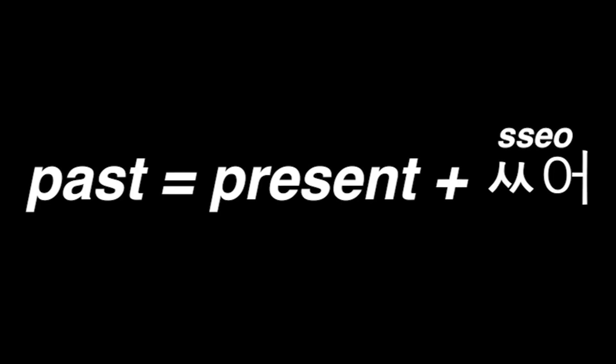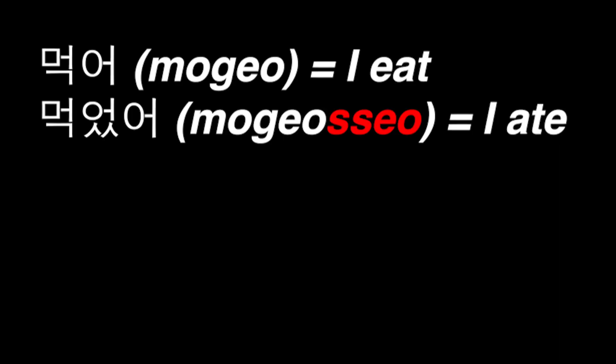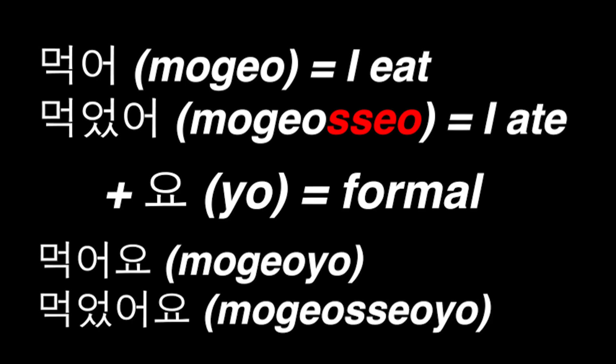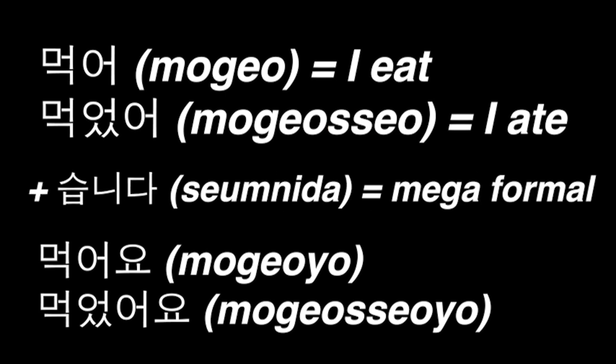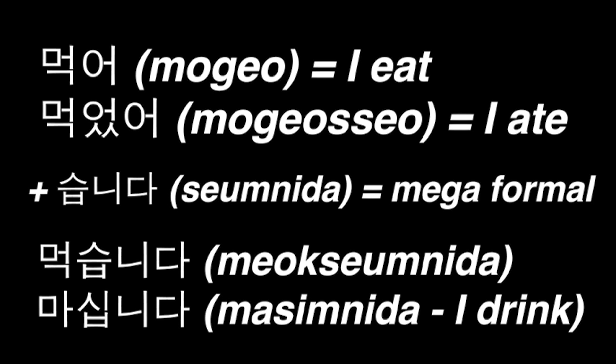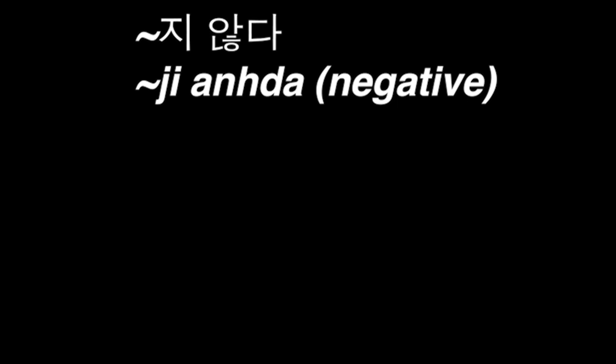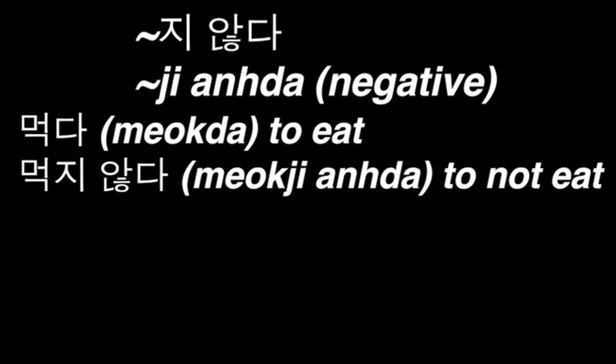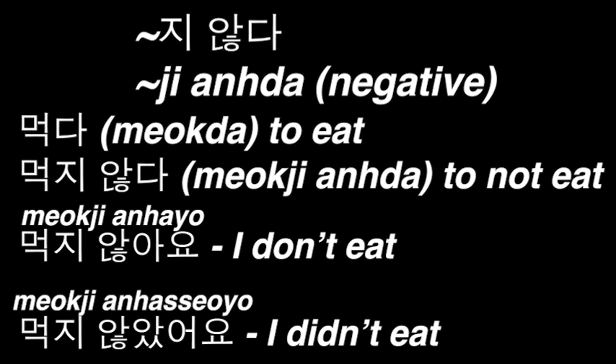The past tense is simple to form — you just add 았/었 to the present form. For example, 먹어 becomes 먹었어. You can add 요 to make it more polite, like 먹었어요. For even more politeness, you can add 니다, like 먹습니다 or 마십니다. When negating a verb, you can add 지 않다. For example, 먹다 means 'to eat,' and 먹지 않다 means 'to not eat.' When conjugated, it becomes 먹지 않아요, 'I don't eat,' or in the past, 먹지 않았어요.